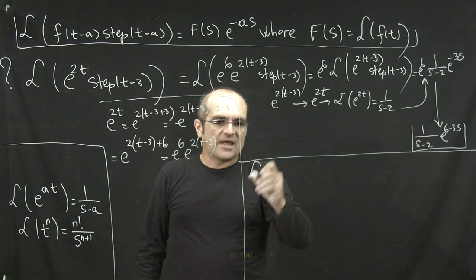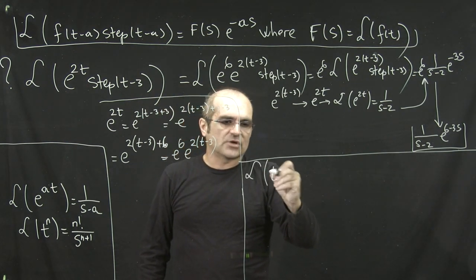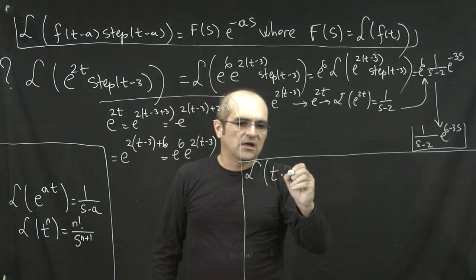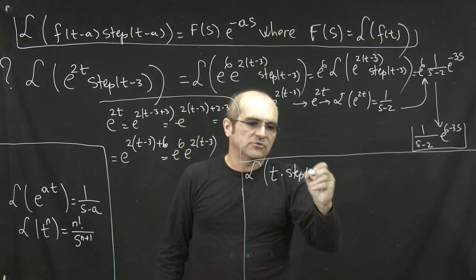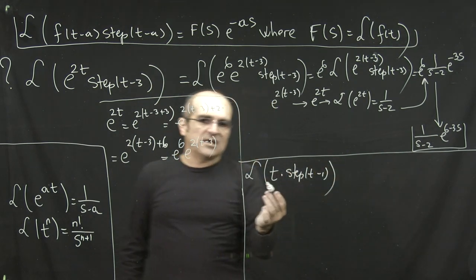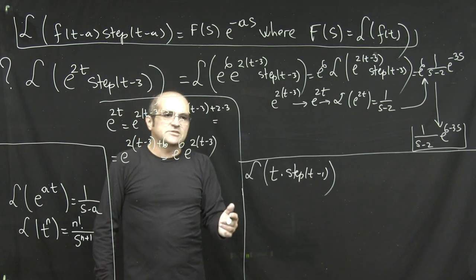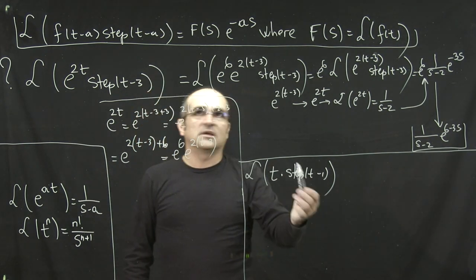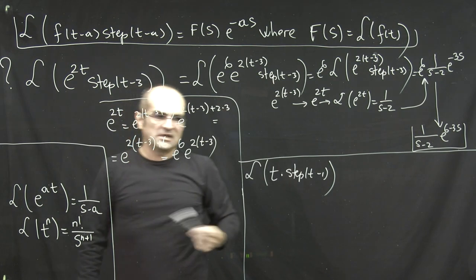So, for example, what if I have to take the Laplace transform of t times step(t minus 1)? Now this t, as a function of t, again, it has to be written as a function of t minus 1, again, to put it in the proper form for the delay theorem.